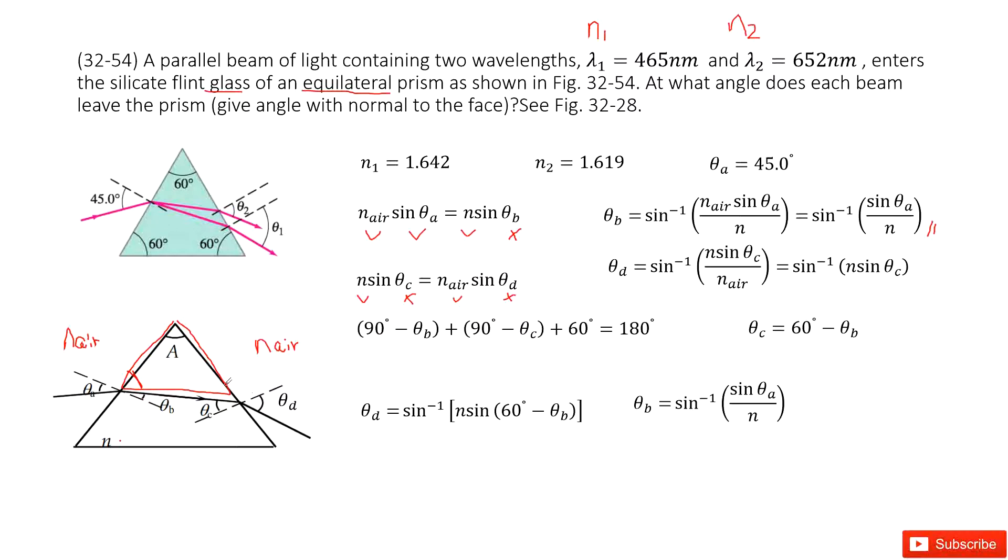Now for this triangle, how much? 90 degrees minus theta c. And in this triangle, 60 degrees equal to 180 degrees. Now with this equation, we can get theta c there. Now we can see theta c is given. Can you find theta d? Yes.